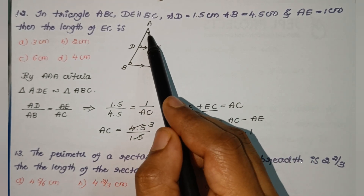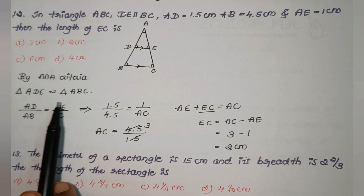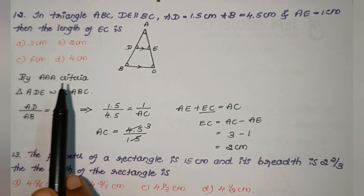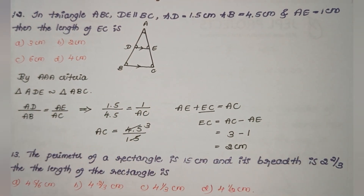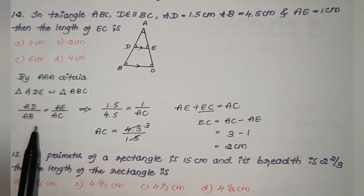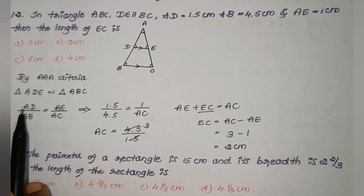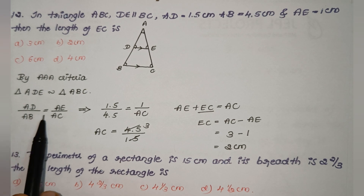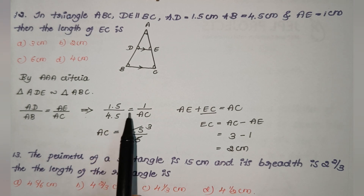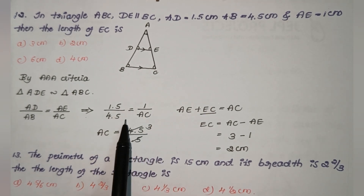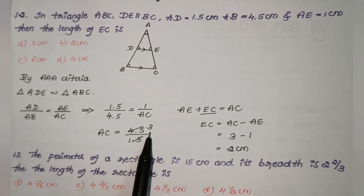The two triangles share a common angle. By AAA criteria, triangle ADE is similar to triangle ABC. Since corresponding sides of similar triangles are proportional, AD/AB = AE/AC. Substituting: 1.5/4.5 = 1/AC, so AC = 4.5/1.5 = 3.